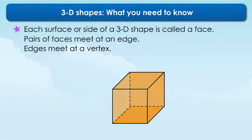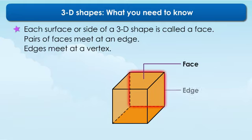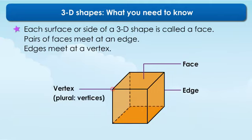Each surface or side of a 3D shape is called a face. Pairs of faces meet at an edge. Edges meet at a vertex.